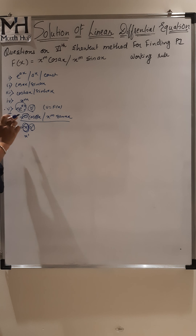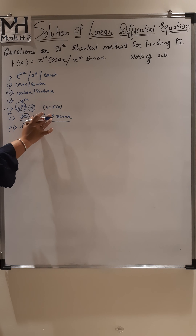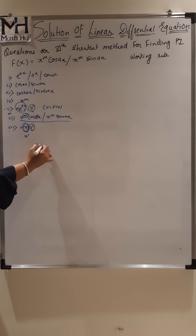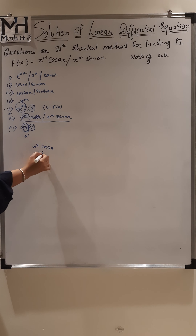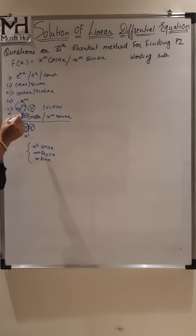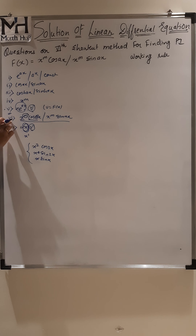The sixth method has fixed functions — x^m·cos(ax) and x^m·sin(ax). For example, functions of x could be: x^2·cos(3x), x^4·sin(2x), x·sin(x), and so on. Both functions are fixed; only m changes and a changes. This is how we take this sixth shortcut method.